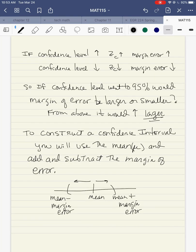Just in general, if the confidence level increases, the critical value increases, the margin of error increases. If the confidence level decreases, the critical value would decrease and also the margin of error will decrease. So if the confidence level went to 95%, again, this is from the previous example which the confidence level was 90%, so that's an increase. Would the margin of error be larger or smaller? Well, from the above, when the confidence level increases, the margin of error would be larger, because that also increases.